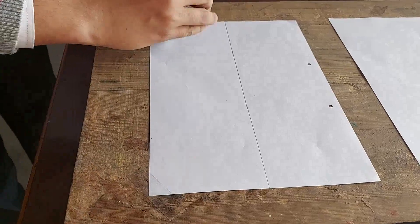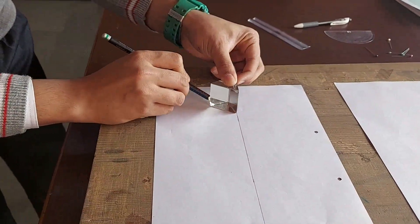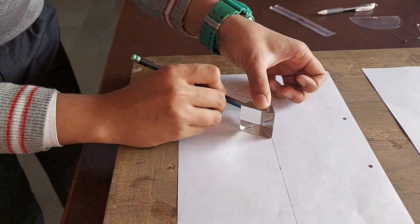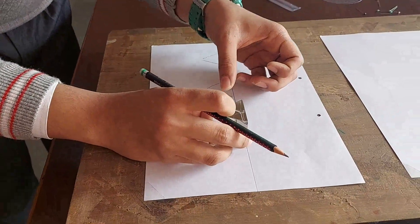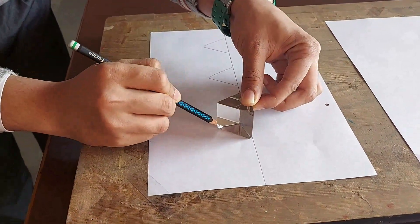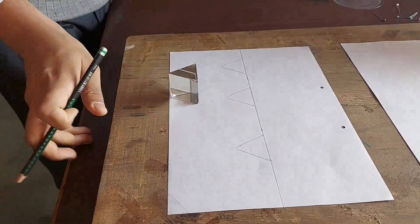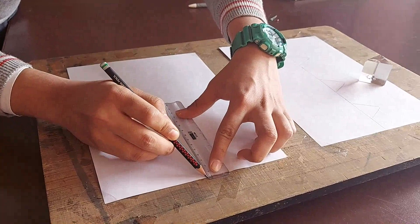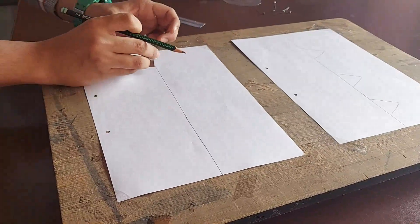After that, you place the prism over here and trace its outline. Make 6 such outlines, 3 on one sheet and 3 on the other sheet.